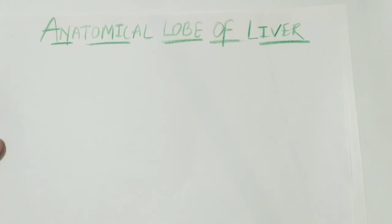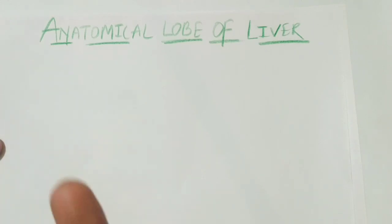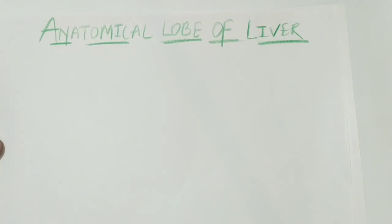The liver has two surfaces. The first surface is the diaphragmatic surface, which is actually the superior surface. The second surface is the visceral surface, or inferior surface. By the name it is clear that the diaphragmatic surface is covered by your diaphragm, and the inferior surface is covered by your visceral organs — such as the colon, the first part of the duodenum, the gallbladder, the stomach, and the right kidney.